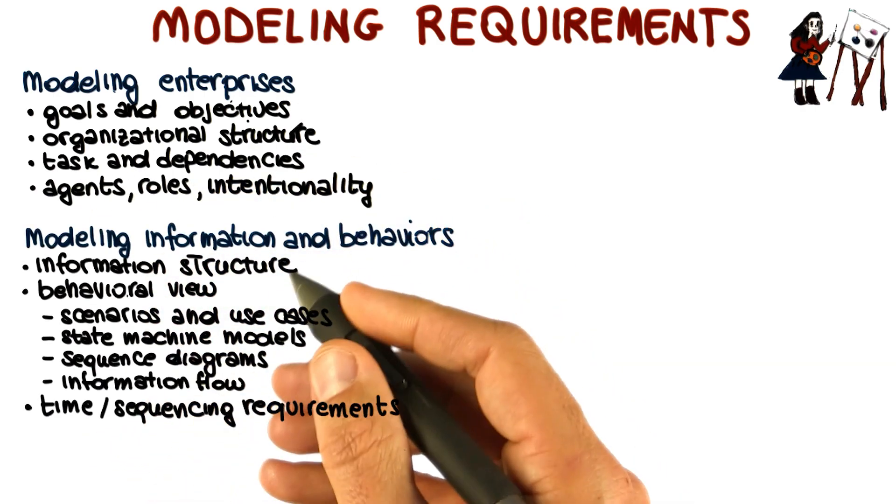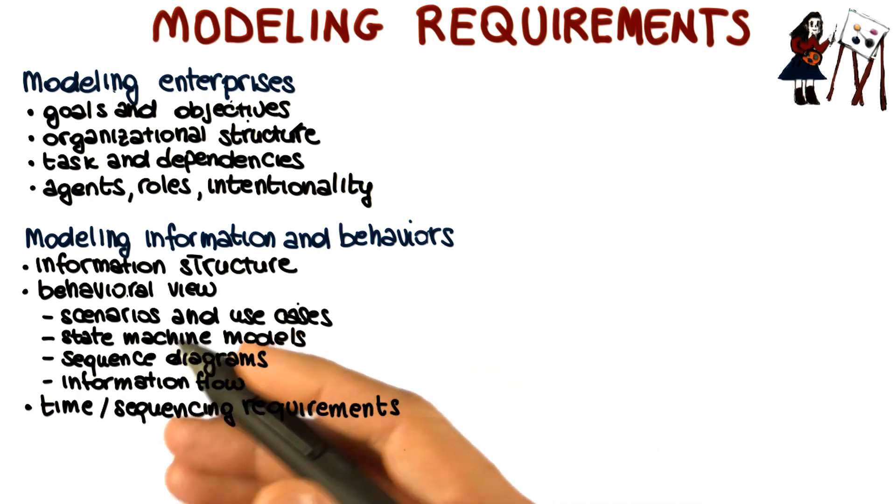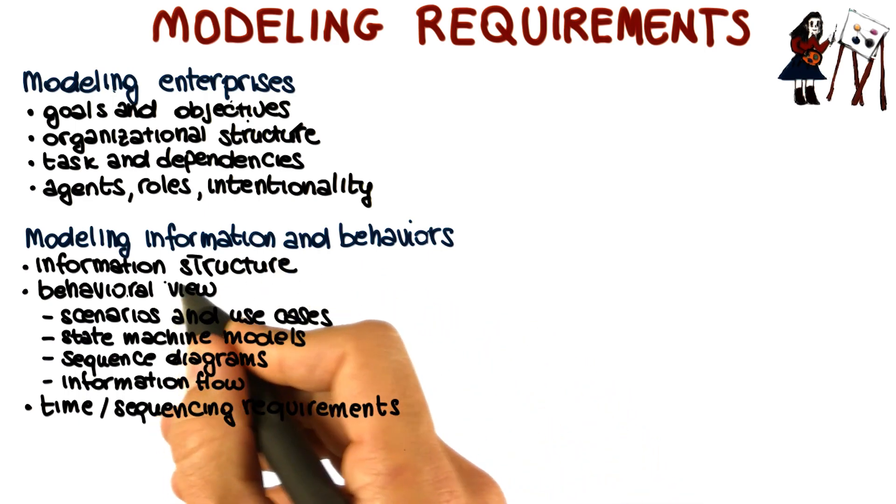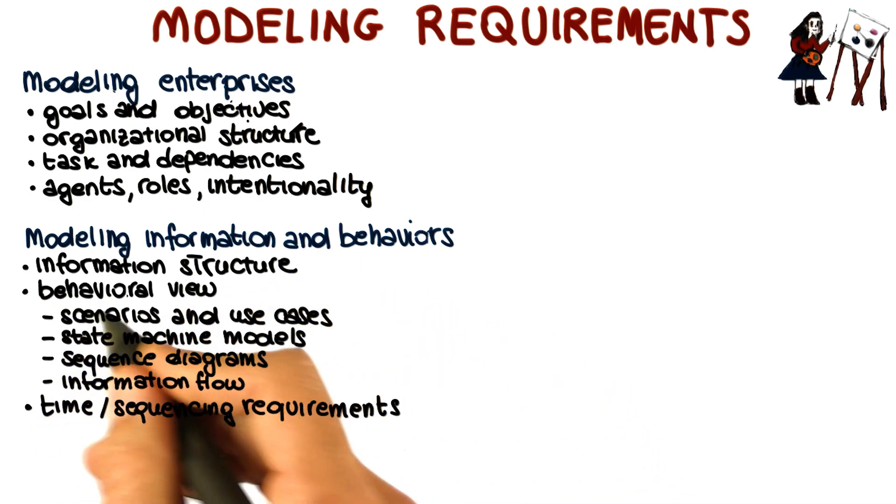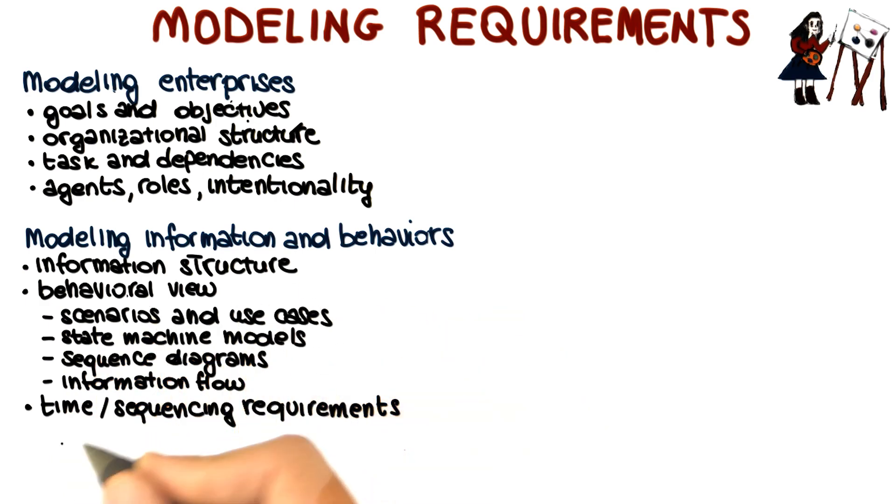Conversely, if your focus is on information and behaviors, you might want to concentrate on aspects such as the structure of the information, various behavioral views (some of which we will see in the next lesson), or maybe time or sequencing requirements.